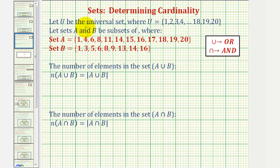In this example, we're given the universal set contains the whole numbers from one through twenty. And sets A and B are subsets with the elements given here.